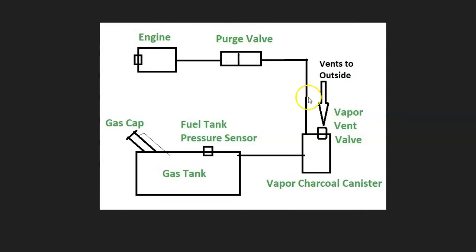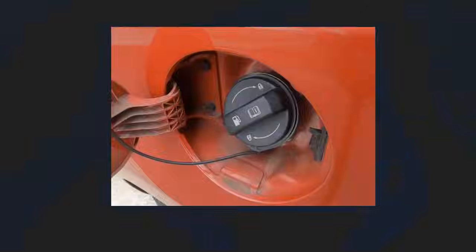A lot of people get the purge valve and vent valve mixed up. While they're both solenoids that open and close, they do different things, so be sure not to confuse them. The purge valve is up on top of the engine, and the vent valve is down near or right on the charcoal canister.